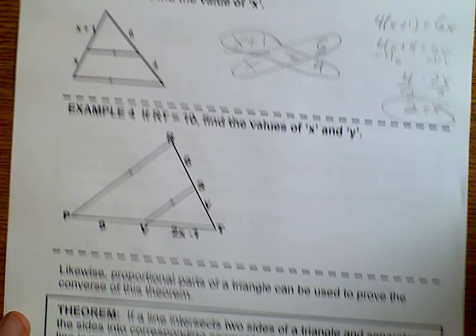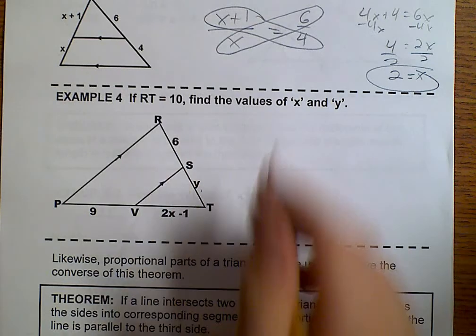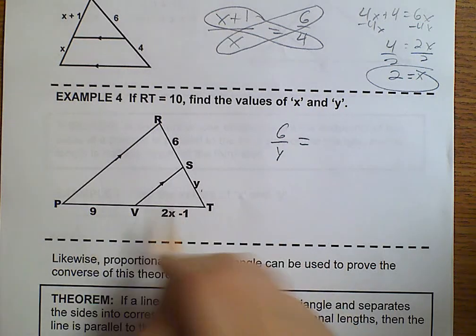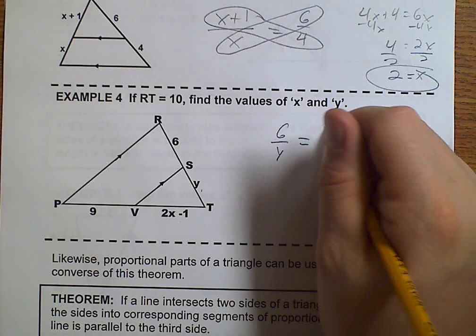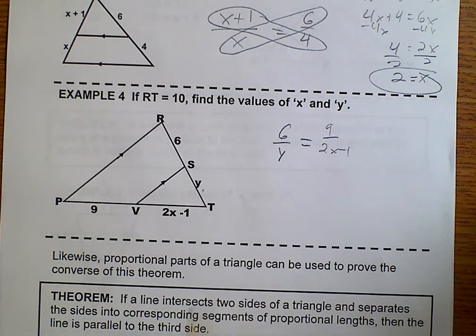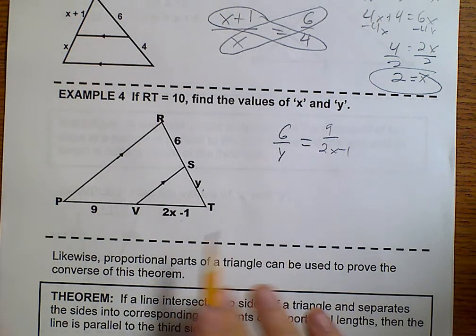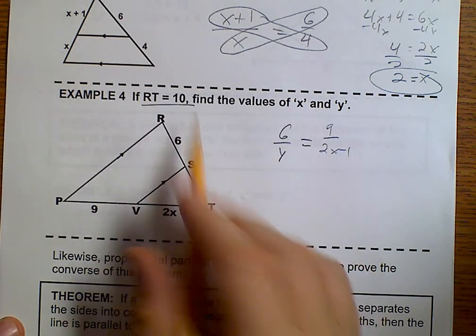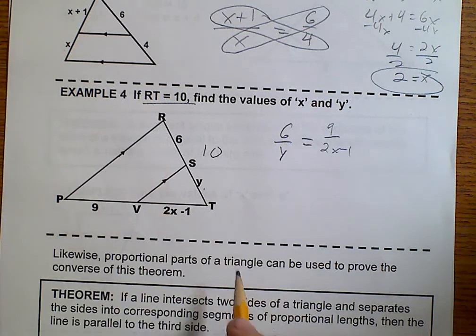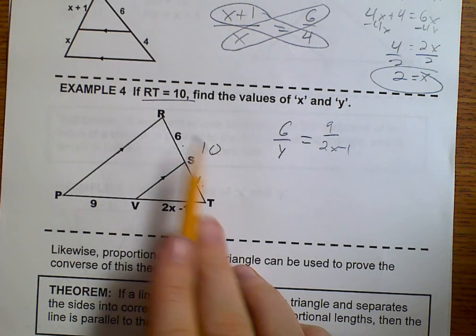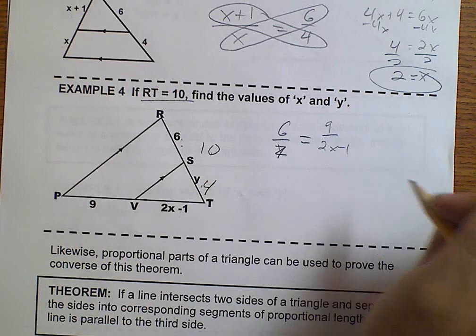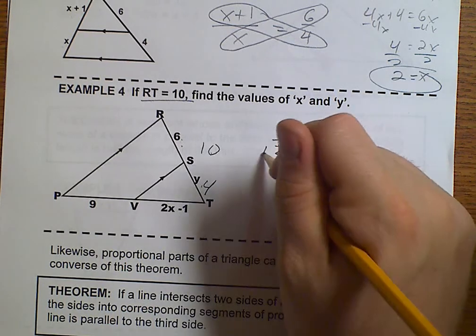On number 4, we have that 6 over Y is 9 over 2X minus 1. But I can't solve anything because I've got X and Y. So let's see if we can figure out something. This says that RT is 10. Well, if RT is 10, and this is 6, 10 minus 6 is 4. So the Y is not Y, the Y is 4.